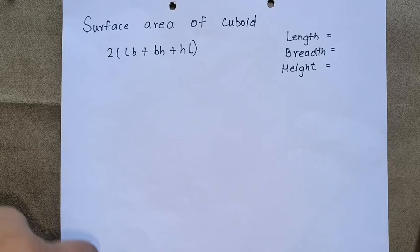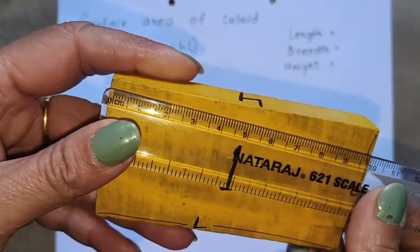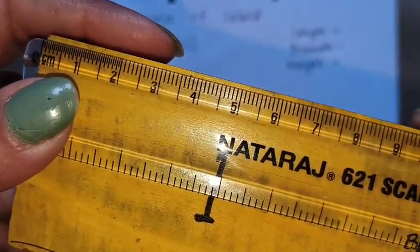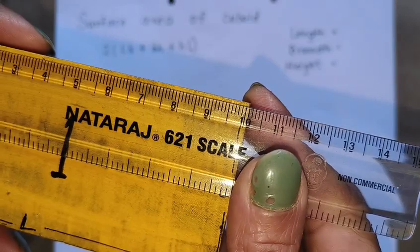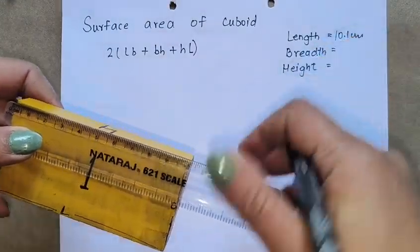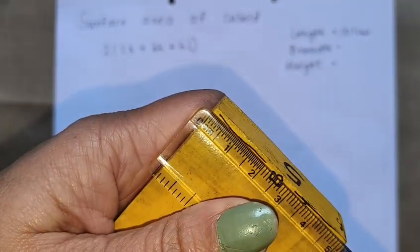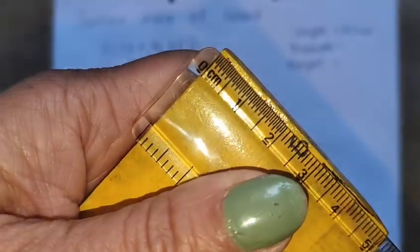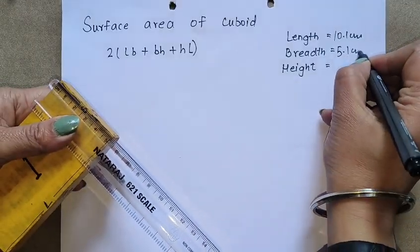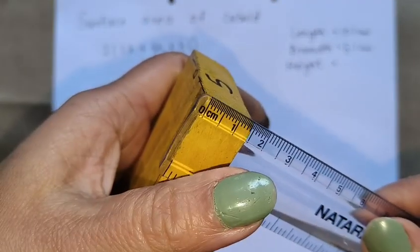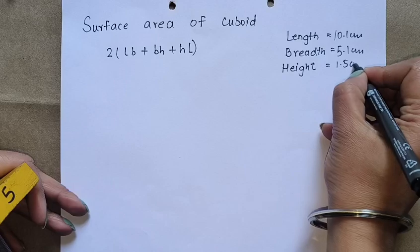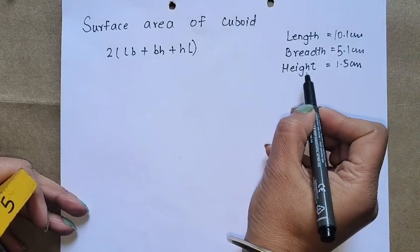To calculate the surface area of a cuboid, we need the length, breadth, and height. The length of this cuboid is 10.1 centimeters, the breadth is 5.1 centimeters, and the height is 1.5 centimeters. We will substitute these values into the formula.